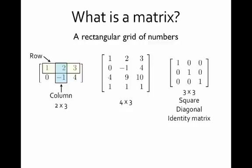This particular matrix has ones on the diagonal that goes from the top left to the bottom right, and zeros elsewhere, so we call it a diagonal matrix. In particular, the matrix that has ones on the diagonal and zeros everywhere else is very important, and that's called the identity matrix.